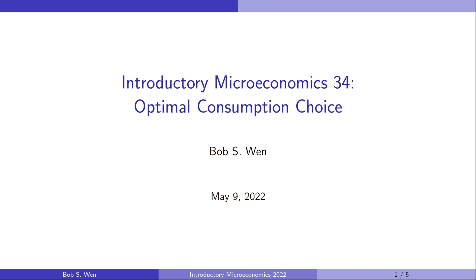Hi, I'm Bob. In the last couple of videos, we have learned about consumers' budget constraints and consumers' preferences. The budget line contains all the combinations of goods the consumer can afford, given her income and the prices of goods. The indifference curve represents all the bundles of goods that provide the consumer with the same satisfaction. A higher indifference curve is preferred to a lower indifference curve.